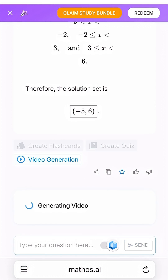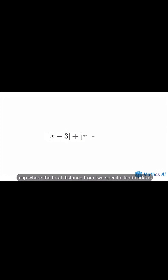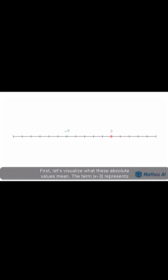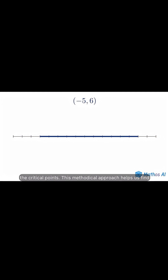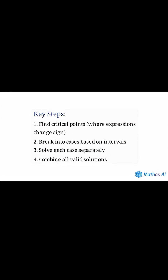Let's have a look at the video generation feature. Ever wondered how to find all the points on a map where the total distance from two specific landmarks is less than a certain limit? The key part here is the ability to visualize what's really going on — the number line, the intervals, and how the union of the three cases is the interval negative 5 to 6. Very interesting stuff. Do check out Mathos AI — link is in my bio.